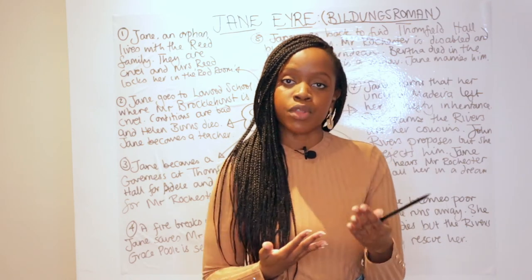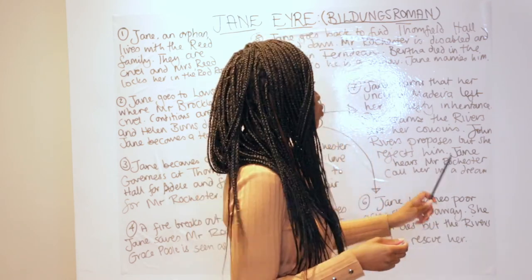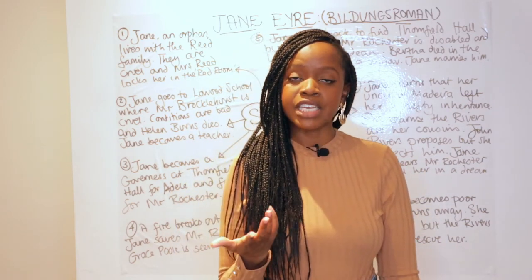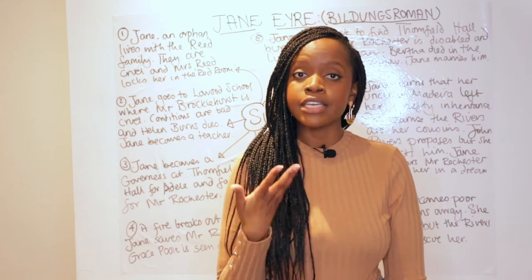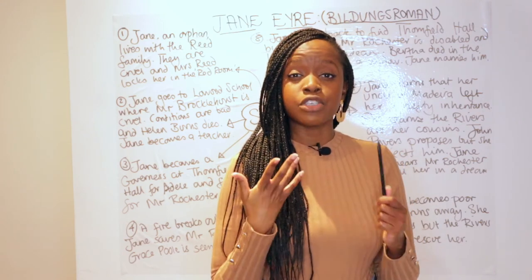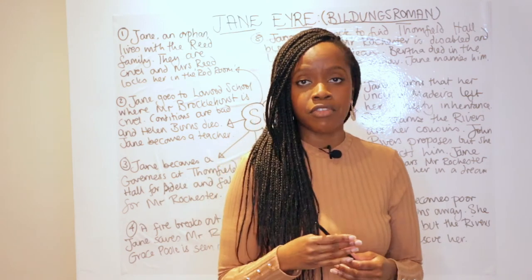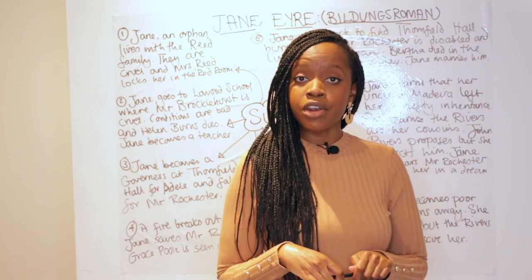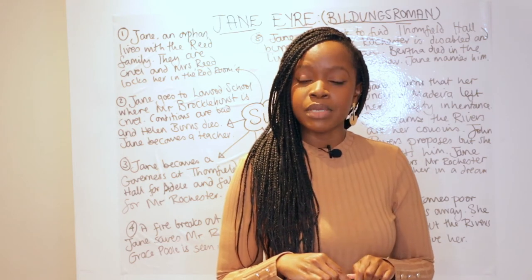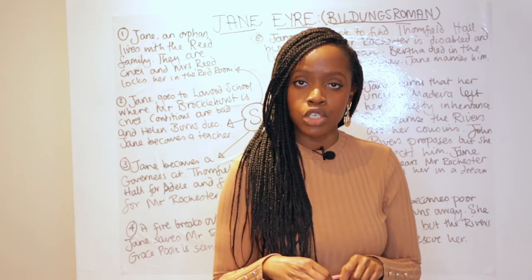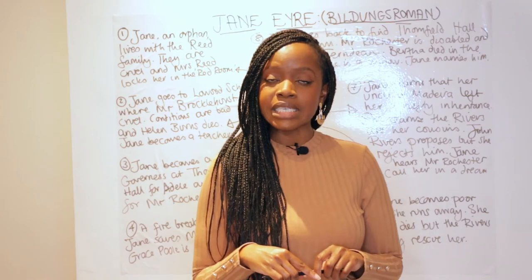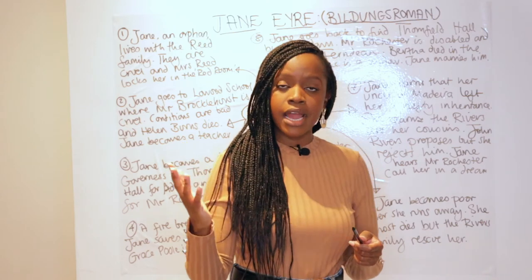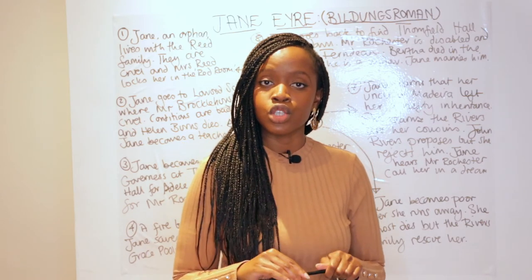Mr. John Rivers is very devout and decides he wants to go work as a missionary in India. He proposes to Jane, trying to get her to marry him and join his mission. Jane realizes she does not truly love him and rejects the proposal, though she comes very close to accepting out of a sense of duty. Then one night she dreams vividly that Mr. Rochester is calling out to her, and she decides to go and seek him.